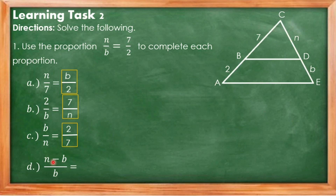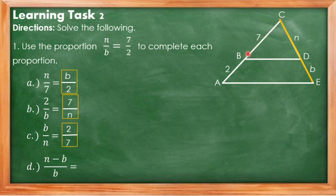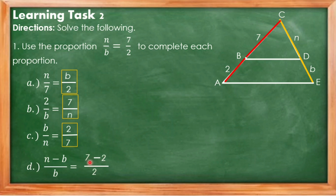Letter D: N minus B over B. N is the longer length and B is the shorter length on one side of the triangle. To find the proportion from the other side, since the longer length was mentioned first, we take 7 minus 2 over 2. Simplifying, 7 minus 2 equals 5, so the answer is 5 over 2. That's how you answer learning task number 2, number 1.